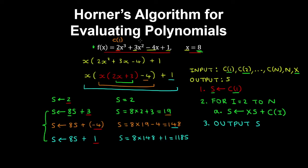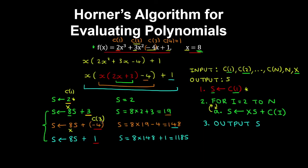In our example, coefficient 1 is 2, coefficient 2 is 3, coefficient 3 is negative 4, and coefficient 4 is 1. First, we initialize the sum to coefficient 1. Then with i equals 2, the sum is equal to x multiplied by the previous value of s, which is 2, adding coefficient 2 which is 3. The for loop repeats: when i equals 3, we have x multiplied by the previous result plus coefficient 3. And when i equals 4, we have x by the previous result plus coefficient 4.